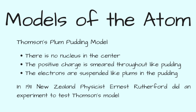In 1904, Thomson developed the plum pudding model of the atom. We can think of the atom as a bowl of pudding, with positive charge represented by the pudding and the negative charges — the electrons — represented by the plums that are suspended in the pudding.